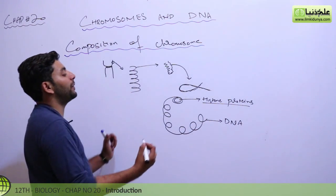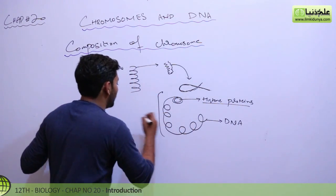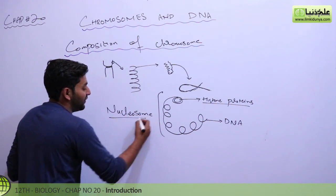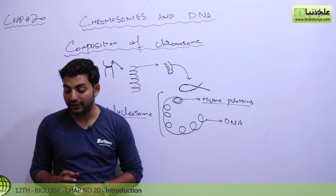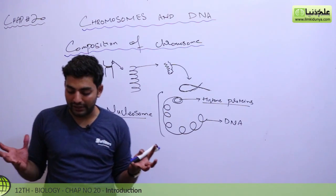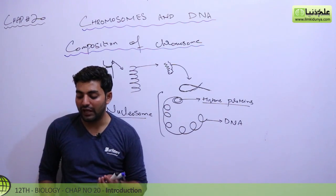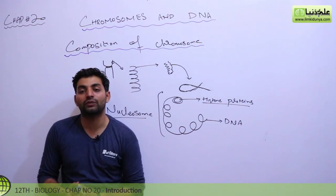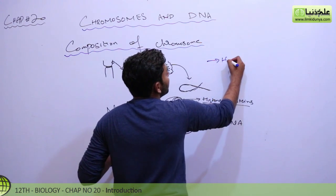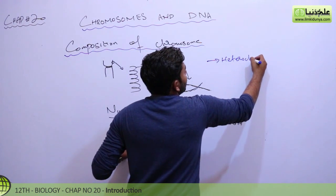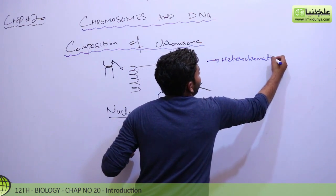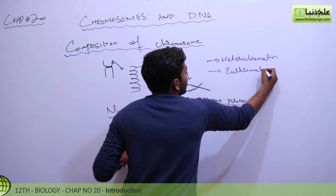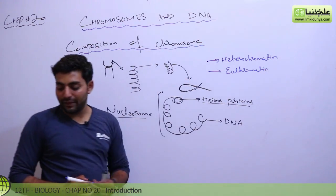This structure is called a nucleosome. This is the definition of the nucleosome, ladies and gentlemen, you have to remember it. There are highly condensed portions of chromatin which we call heterochromatin, and the remainder of the chromosome is euchromatin.